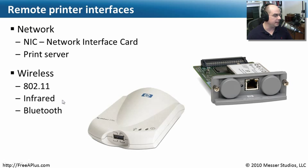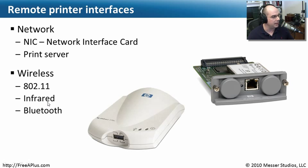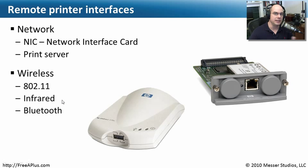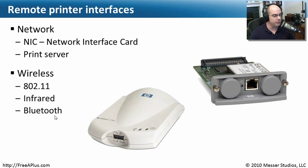You'll also see wireless connectivity on some older printers using infrared. With infrared, you need a short, line-of-sight connection between your computer and the printer. As we covered in our video on laptop communications technologies, infrared is something you just don't see much anymore, but you still see it in use especially with printers. And lastly, Bluetooth — an emerging technology used for much more than headsets these days. We use it for laptop keyboards, mice, and also printers. So you may see a Bluetooth printer in your environment.